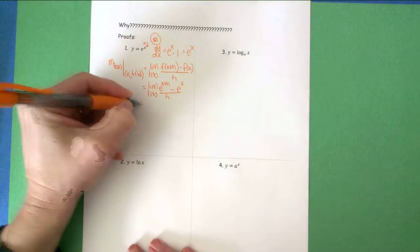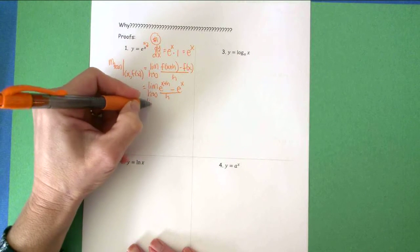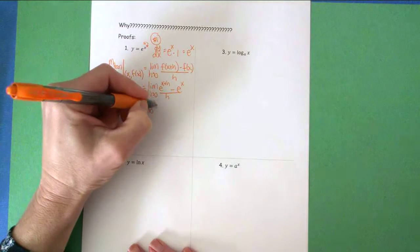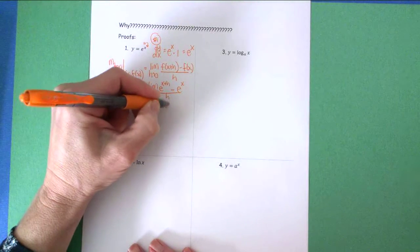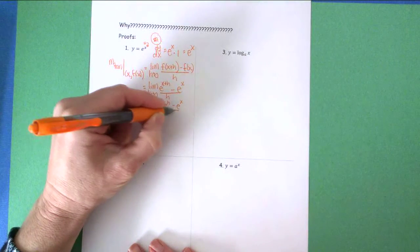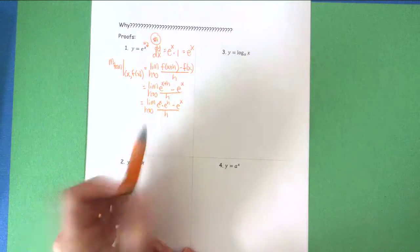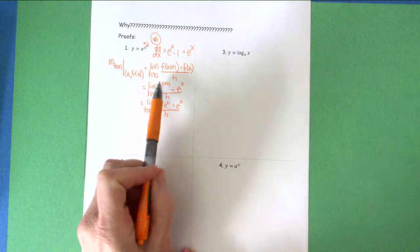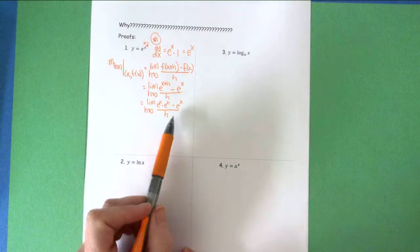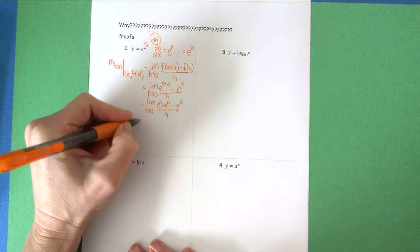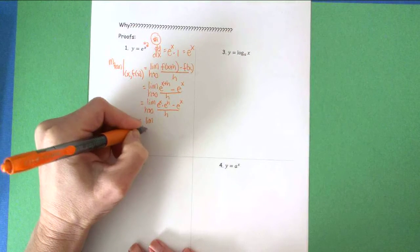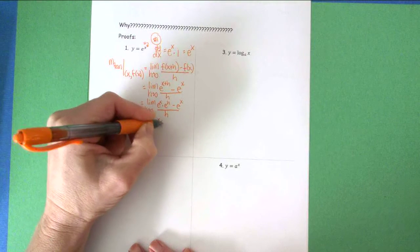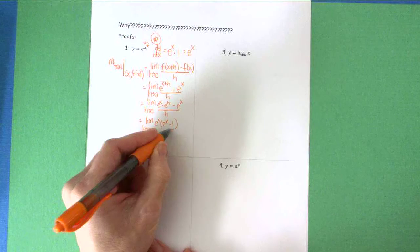Next, I'm going to use algebra one exponent rules to separate e^(x+h) into e^x times e^h. The reason I can do that is if I wanted to multiply e^x times e^h, I would just add my exponents, which would get me right back. So now my next step is going to be to factor out an e^x. This leaves me with e^h minus one all over h.